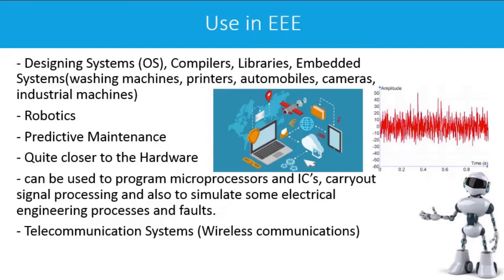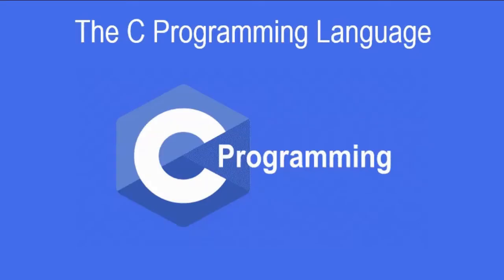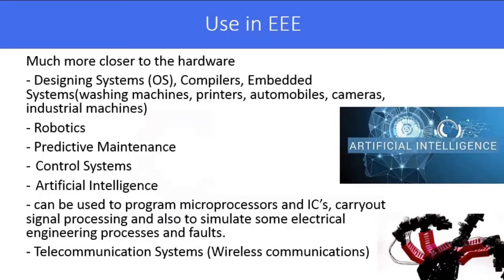On number two we have the C programming language. C is even closer to the hardware than C++. What you can achieve mostly with C, you can also achieve with C++ — they are mostly complementary — but C goes much deeper into the hardware. It's a powerful language used in operating systems, compilers, embedded systems, robotics, control systems, artificial intelligence, and telecommunications. As an electrical engineer, C would be a great asset to learn to help you work efficiently.